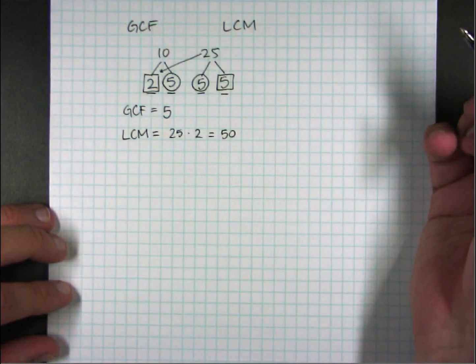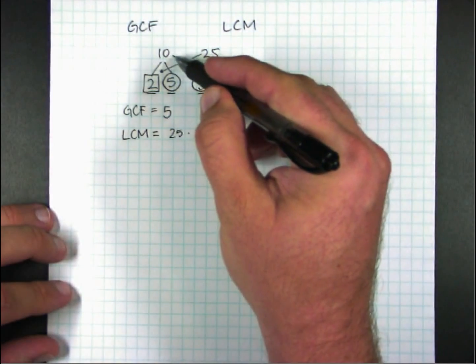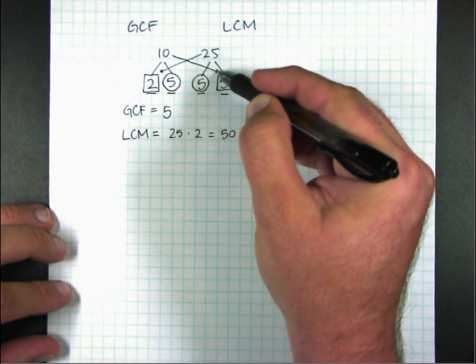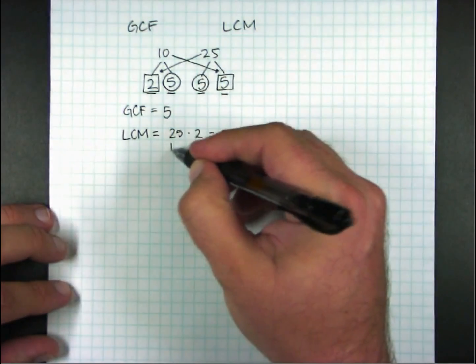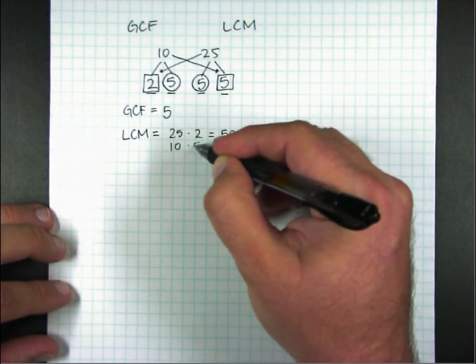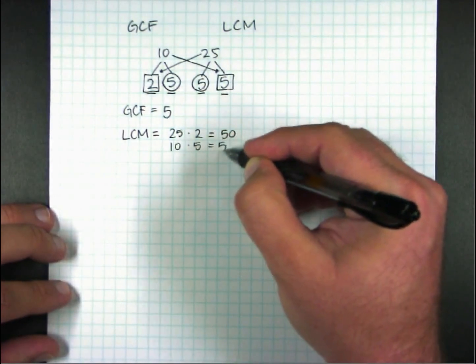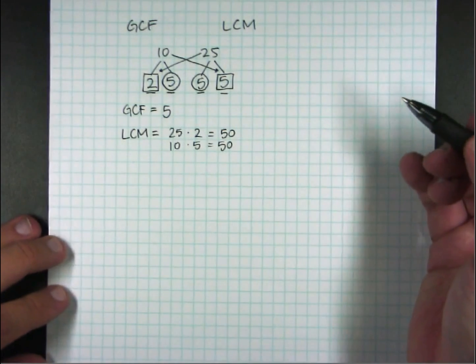It doesn't matter which one I picked, because if I had started from 10, what's in the box on the other side is 5. 10 times 5 is 50. So the least common multiple is 50.